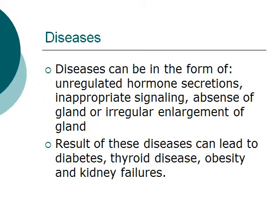What types of diseases are related to the endocrine system? There are a lot, and they can be in the form of unregulated hormone secretions, inappropriate signaling of certain hormones, or absence of glands or irregular enlargement of a gland. These can lead to diabetes, thyroid disease — where you would have a very enlarged thyroid visibly in your neck — obesity, or other kidney failures.